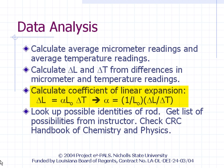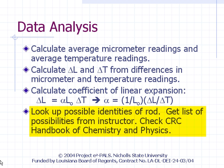You should have recorded L₀, the length of the rod, before you assembled the apparatus. If you forgot, you could do it after you disassemble it. Once you have calculated your alpha, identify the material that your rod is made of based on the list of possibilities given by your instructor, and look up the coefficient of linear expansion from the CRC Handbook of Chemistry and Physics.